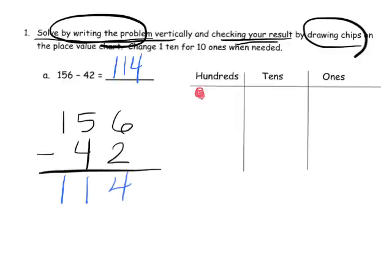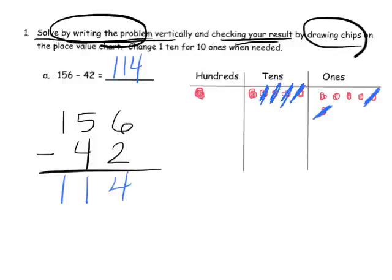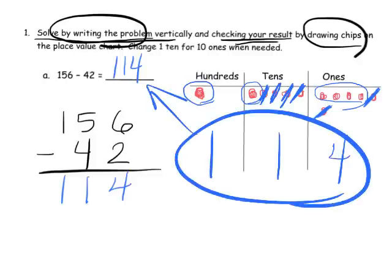We're going to model it by drawing one hundred, five tens, and six ones — so there's our 156. Now we need to subtract 42. We're going to begin by subtracting two ones: one, two. Then we're supposed to subtract four tens: one, two, three, four. So what are we left with? We're left with four ones, one ten, and 100 — and of course that's the same answer of 114 that we got all along.